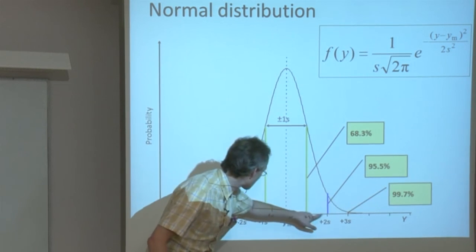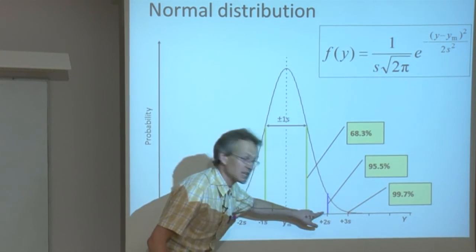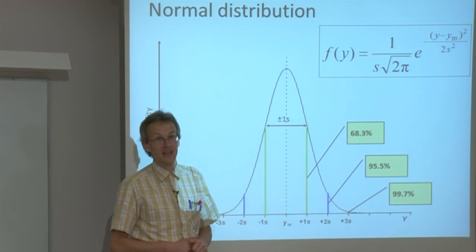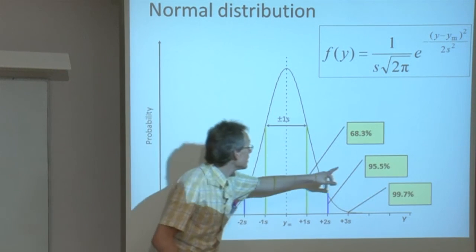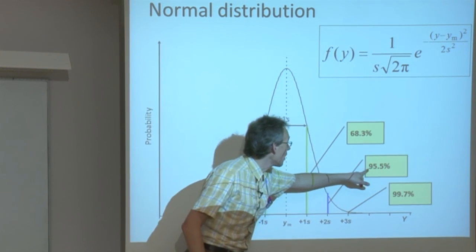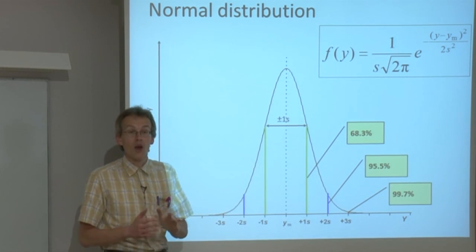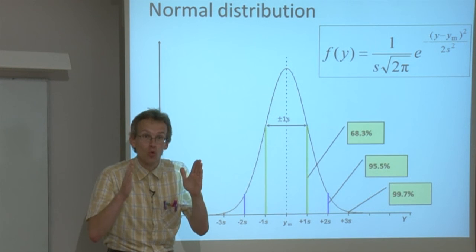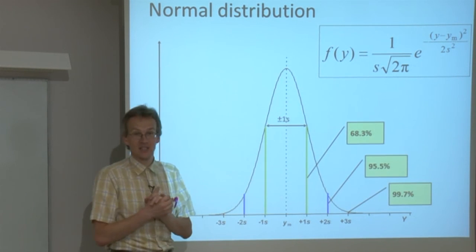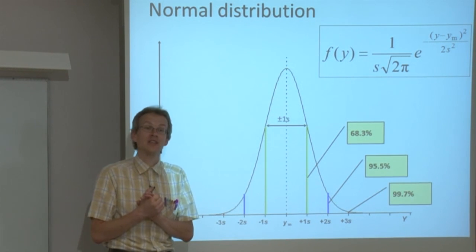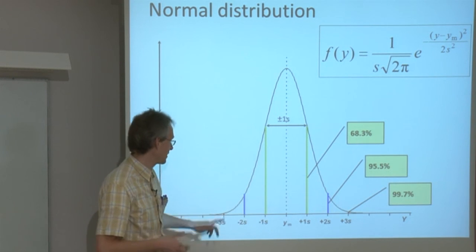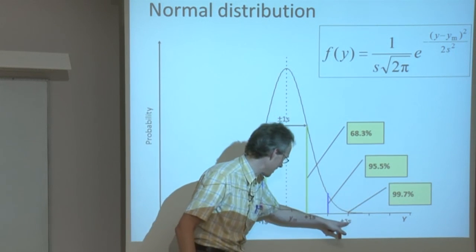This 2s level, or as we say, expanded uncertainty at k=2 level, is uncertainty at roughly 95.5% probability. The probability of the true value falling within this range is now significantly higher. Likewise, if we multiply s by 3, then the same percentage will be 99.7%.